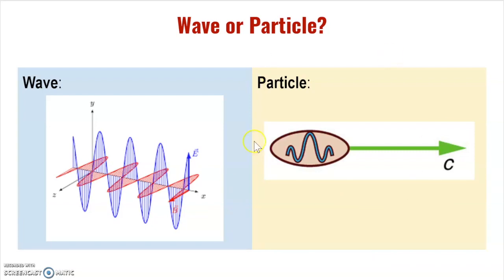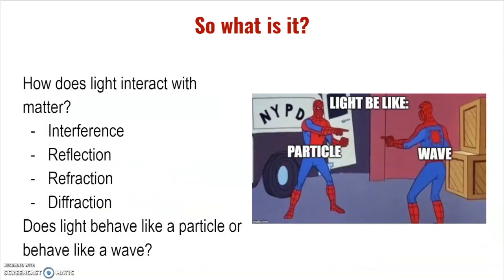When we talk about light being a particle, we're talking about photons. Remember that photons are quantized, or quantifiable packets of light — they are massless and they carry energy. So the big question is: if light is a wave, how can it be a particle, and if light is a particle, how can it be a wave?